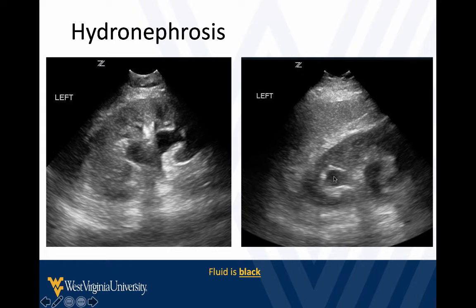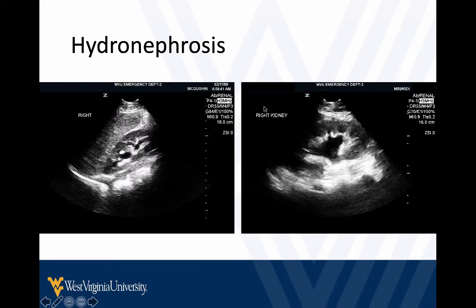Remember, we fan through the kidneys completely — we don't just take a single picture. The fluid is black. These are both cases of probably mild hydronephrosis. We see fluid dilating the collecting system — it's within the collecting system and dilating it. We can see the other landmarks look pretty good. Sometimes this is called the bear claw sign in the kidney where it's dilated. Hydronephrosis is relatively straightforward as long as you get a decent image and fan through it completely.